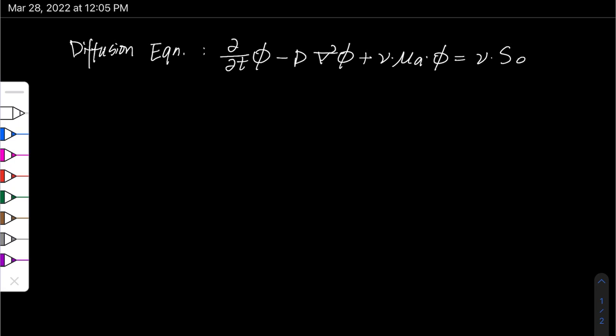We will look at three specific fNIRS applications. The first one is time domain. In time domain fNIRS, the source is actually a very short pulse of photons, which could be expressed as a delta function at the location of zero and at time zero.